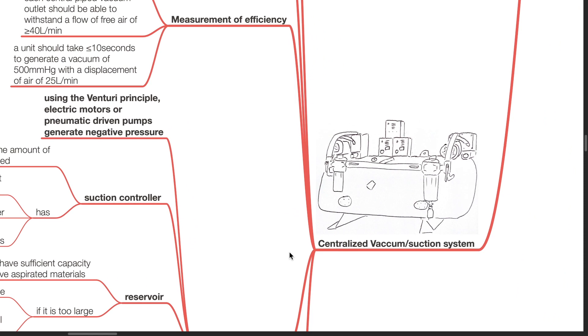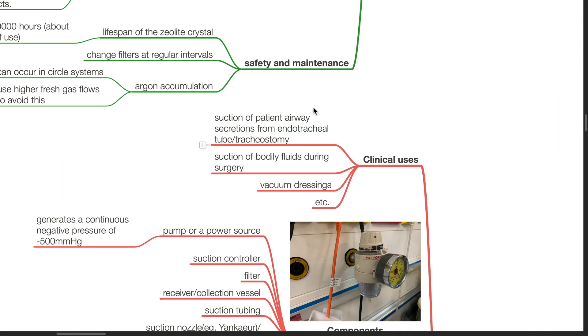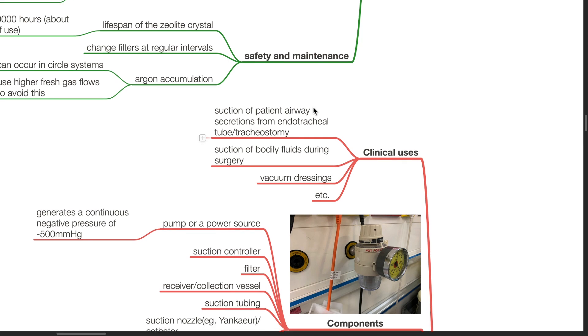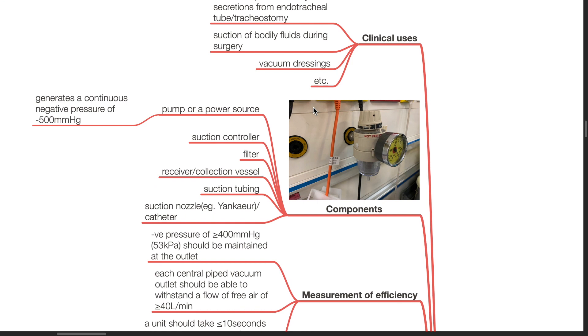Centralized vacuum or suction system: Clinical uses include suction of patient airway secretions from endotracheal tube or tracheostomy, suction of bodily fluids during surgery, vacuum dressings, etc. Components include a pump or a power source which generates a continuous negative pressure of negative 500 mmHg, suction controller, filter, receiver or collection vessel, suction tubing, and a suction nozzle or catheter.